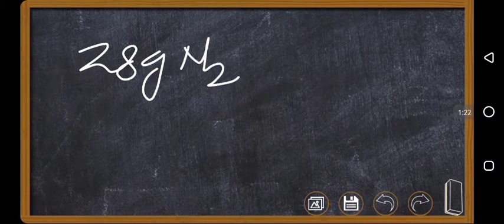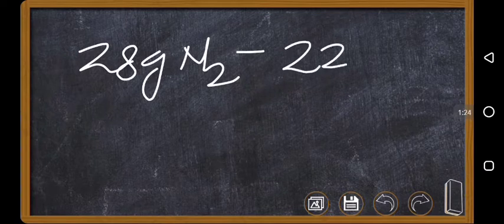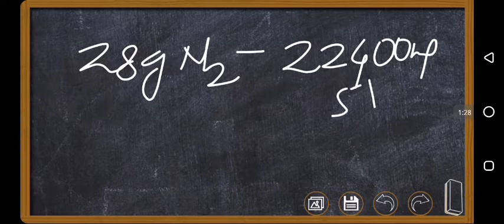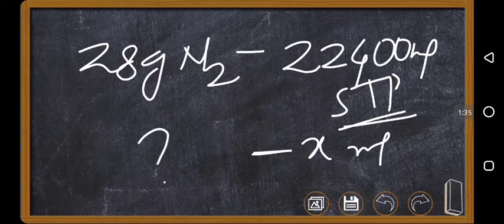So, the formula is very simple. As we know, 28 grams of nitrogen contains 22,400 ml volume at STP conditions. Here, whatever the volume you are getting, that you just check, x ml if you are getting, what is the mass. Then based on this, you can calculate.